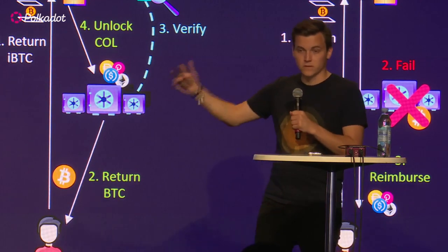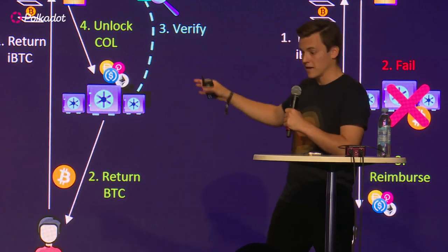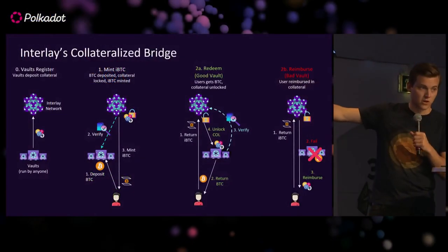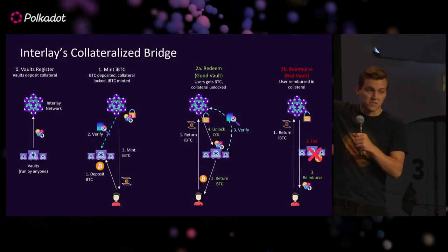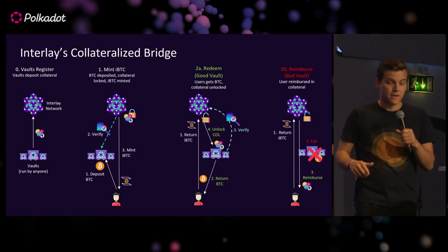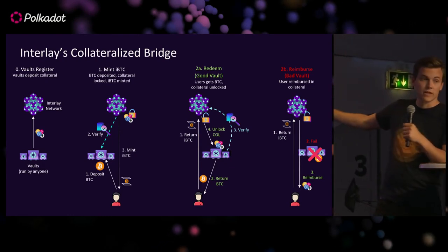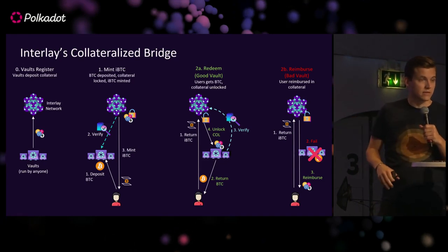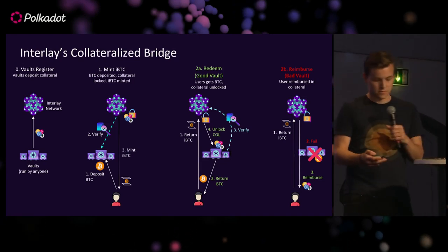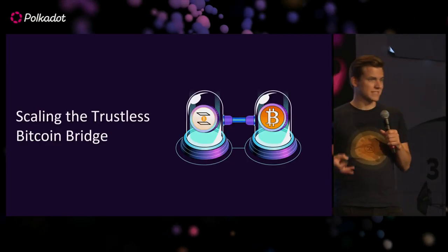Once you've bridged over, you can use your IBTC for whatever you want. In the good case, you get the Bitcoin back and the vault collateral is unlocked after they submit proof that they actually returned your Bitcoin. In the failure case, you get reimbursed in collateral, so you know you will not face financial damage.